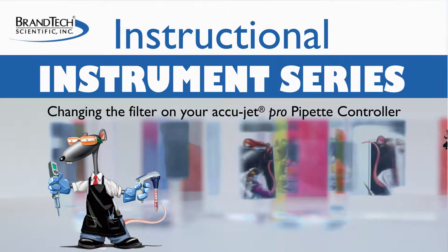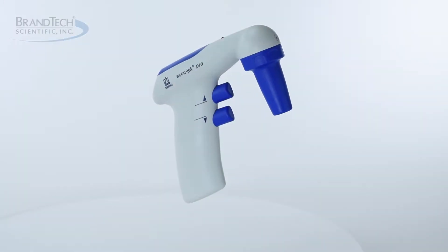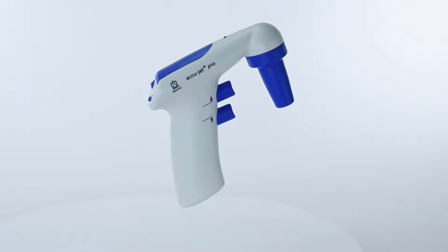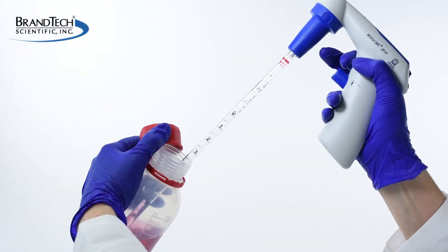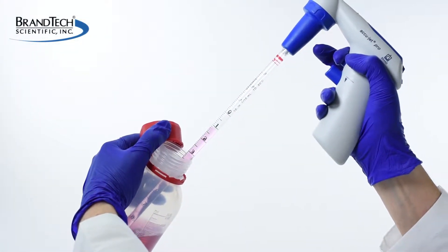How to change a filter on your Brond AccuJet Pro or AccuJet motorized pipette controller. Brond AccuJet Pro and older AccuJet models feature smooth pressure-sensitive speed control.